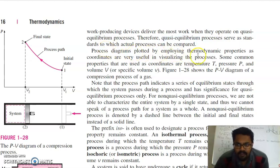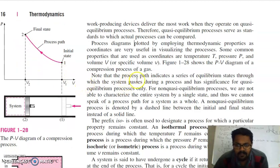Process diagrams plotted by employing thermodynamic properties as coordinates are very useful in designing the process. You can see here, we can represent a thermodynamic process in a coordinate system—that is pressure on one side, x-y coordinate, volume on another side. Some common properties that are used as coordinates are temperature, pressure, and volume. This shows a PV diagram of a compression process of gas. Note that the process path indicates a series of equilibrium states through which the system passes during a process and has significance for quasi-equilibrium processes only.